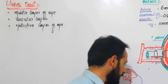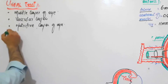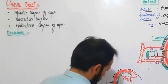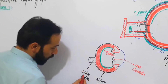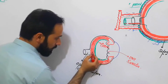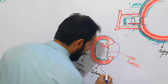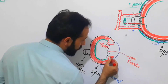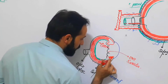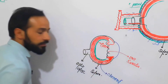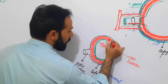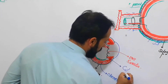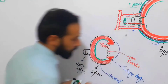Now the divisions: the uveal tract is divided into three parts. From the optic disc up to the ora serrata, this part of the uveal tract is called the choroid. Then from the ora serrata anteriorly, this triangular part of the uveal tract is called the ciliary body. As you can see in the diagram, this is your ciliary body.